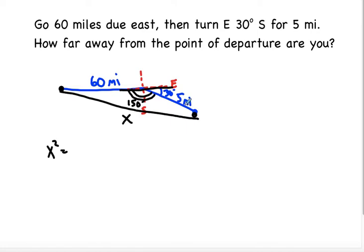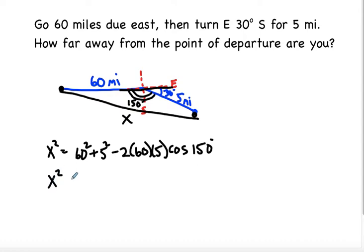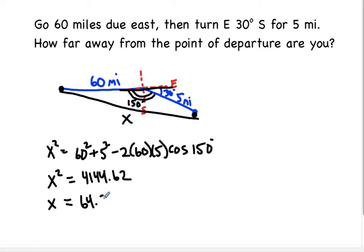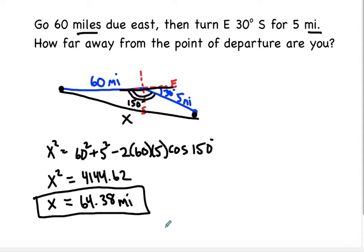Now I can do law of cosines. X squared equals the two sides surrounding the angle, squared and added up, minus two times those sides multiplied together times cosine of the angle in between them. You type all of that in your calculator and you get 4,144.62. You're going to need to take the square root, and you will get 64.38 miles. So 64.38 miles is how far away from the point of departure you are.